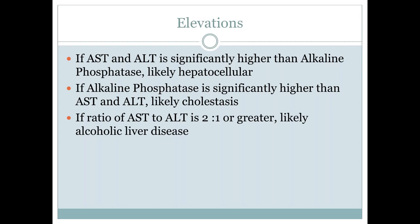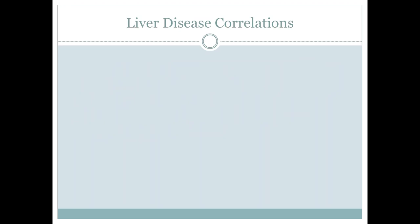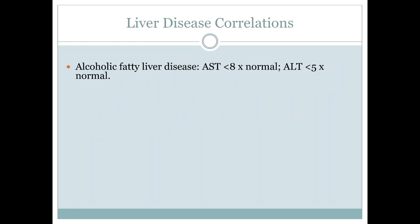A very common disease process we can often determine quickly on blood tests is alcoholic liver disease. If you look at the ratio of AST to ALT and AST is two times greater than ALT, this is likely coming from alcoholic liver disease — most of the time, though there could be other reasons. In alcoholic liver disease, AST is much higher than ALT but usually less than 10 times above the upper normal limits, while ALT is usually less than 5 times the upper limits of normal.